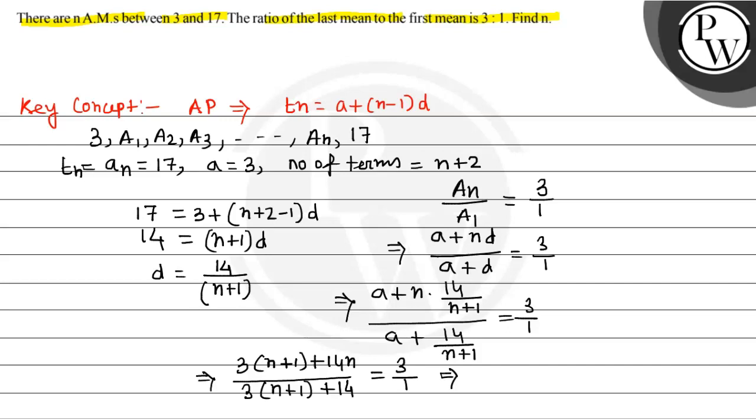19N plus 51. So 8N equals 48. Then the value of N is equal to 6. So N equals 6. Hope you understood it well. Best of luck.